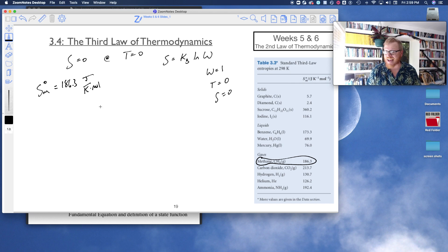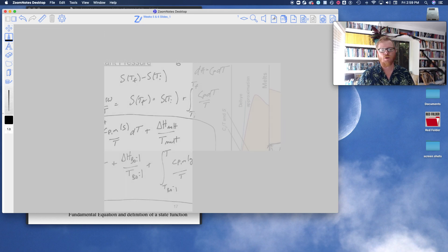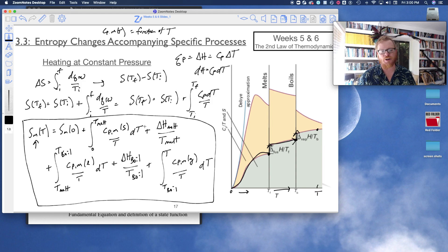Well, methane, we know is a gas at 298K. So to calculate this value for methane, we would have had to do this entire equation. That's kind of what I'm trying to show you, is we know that methane is a gas at 298K. So to calculate that standard molar entropy of methane at 298K, we would have to go through this whole gamut.